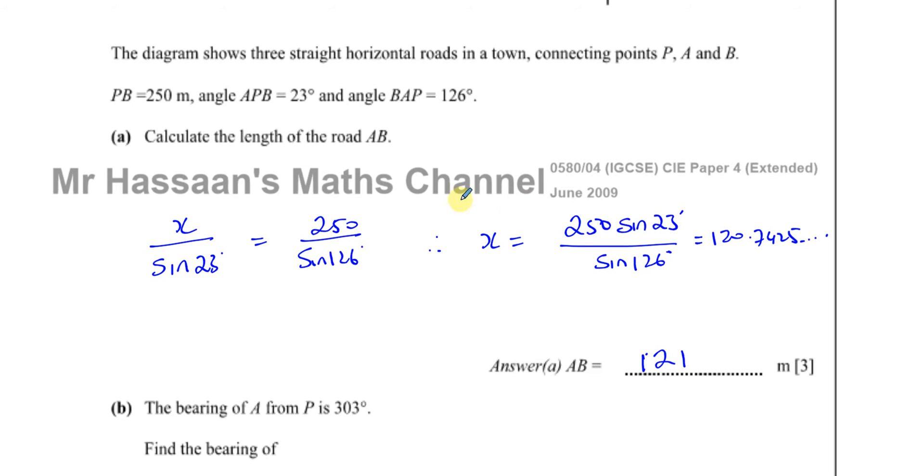Lengths should be rounded to three significant figures as mentioned in the front of the paper. Non-exact values should be rounded to three significant figures, with some exceptions like angles.